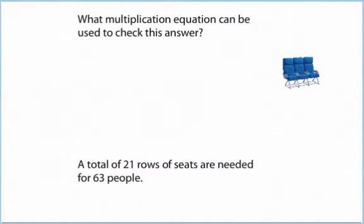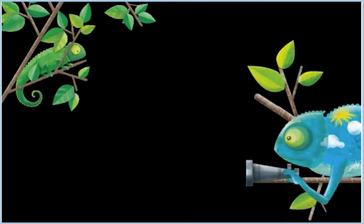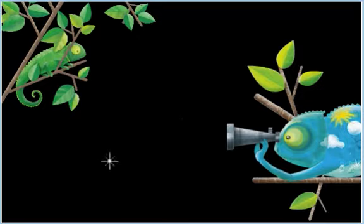What multiplication equation can be used to check this answer? 21 times 3 equals 63.